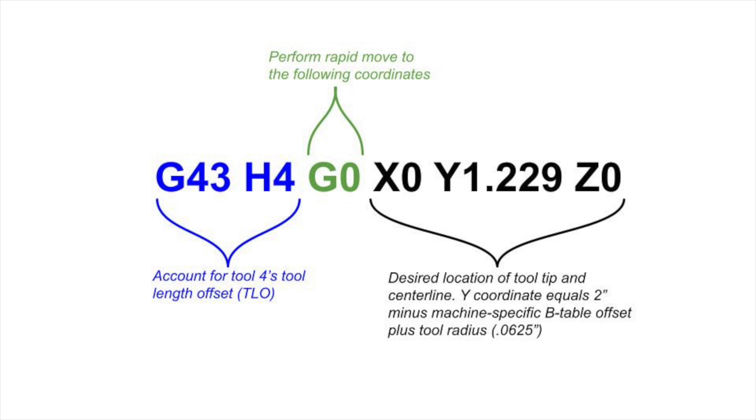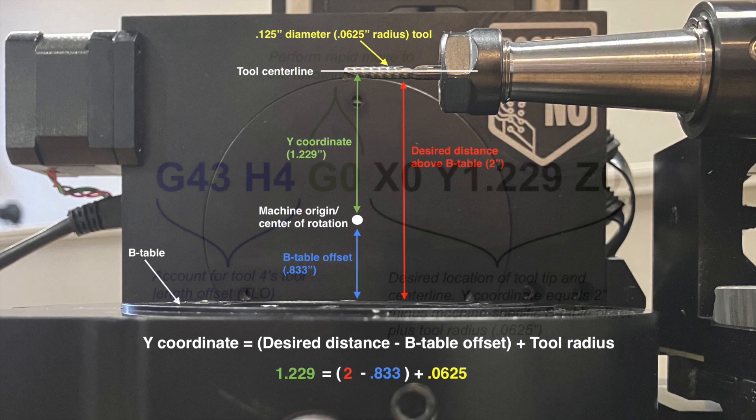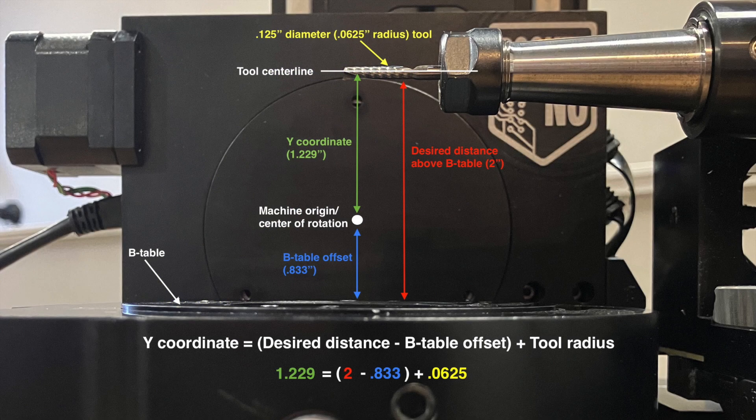This means that the X and Z coordinates can both be zero, but the Y coordinate needs to be calculated. That calculation is: desired distance above B table minus B table offset plus the radius of the tool. This places the outer diameter of the tool at the desired distance above the B table, which is 2 inches in this case.